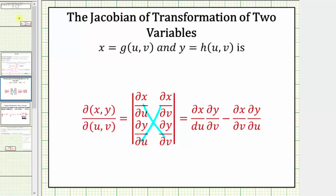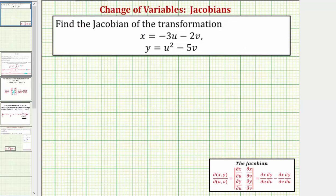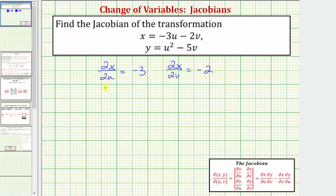Going back to our example, let's begin by determining the partial derivatives. The partial derivative of x with respect to u equals negative three, and the partial derivative of x with respect to v equals negative two. Now looking at equation y, the partial of y with respect to u equals two u, and the partial of y with respect to v equals negative five.